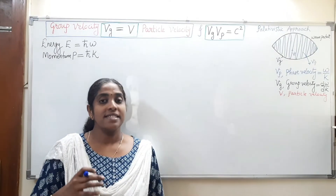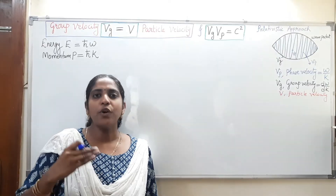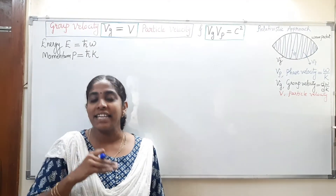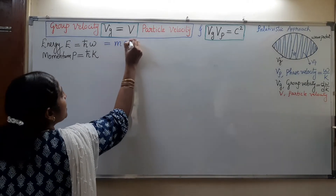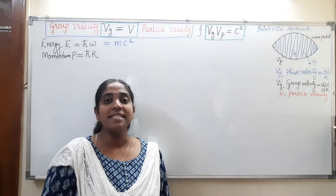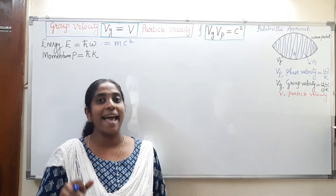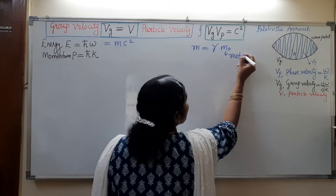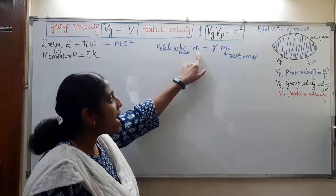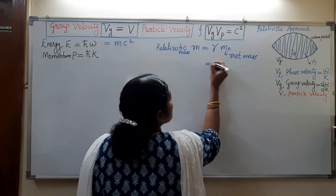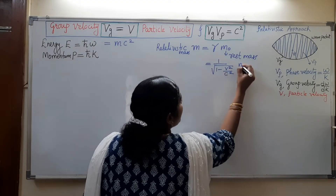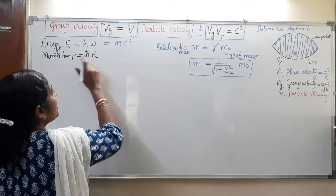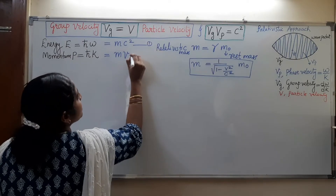In quantum mechanics we deal with very small particles, and such particles can move with very high speed. If the speed of a particle is comparable with the speed of light, we must consider the relativistic effect. In that case, the energy of the particle is given by Einstein's mass-energy relation E equals mc squared, where m is the relativistic mass. The relativistic mass is related to the rest mass m0 by m equals gamma m0, where gamma equals 1 over the square root of (1 minus v squared over c squared), and v is the speed of the particle. The momentum is P equals mv. This is Equation 1 and Equation 2.